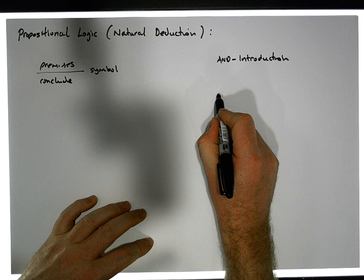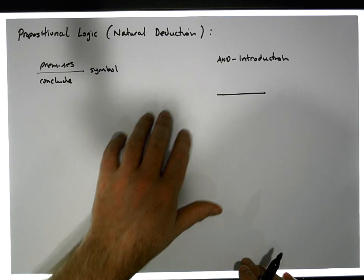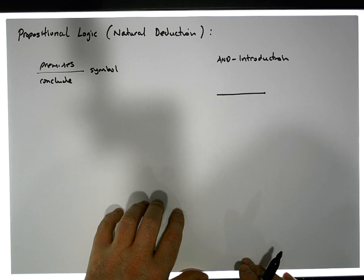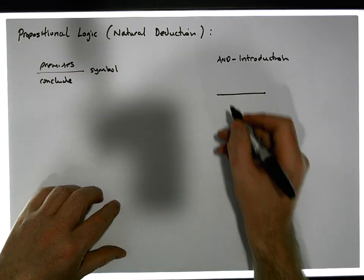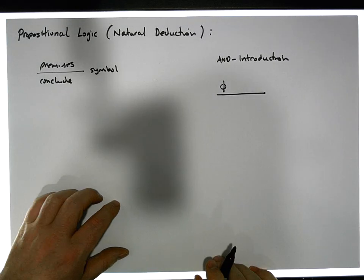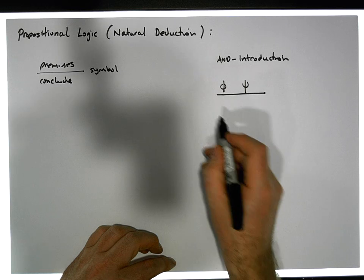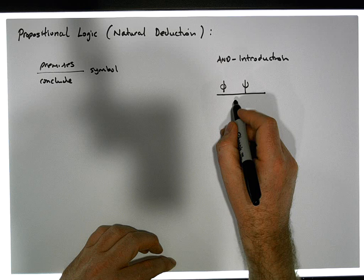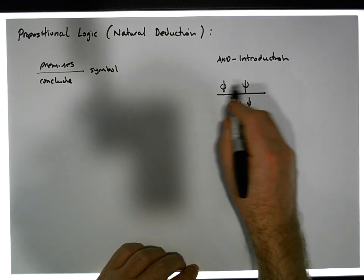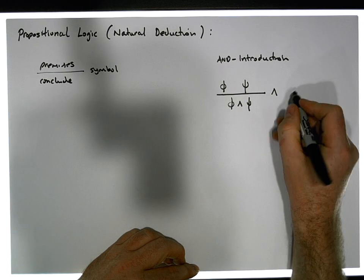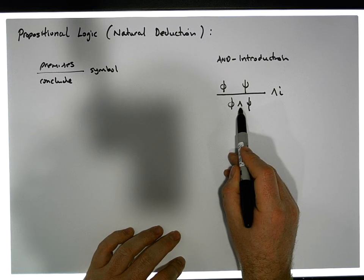When we're conducting a proof, we start with a set of premises and from them we deduce other things until eventually we reach a conclusion. What AND introduction says is this: if we have deduced phi from some previously defined things, and if we have deduced psi from those same things, then we can conclude that phi AND psi must be true. This is known as AND introduction, symbolized by the hat followed by an 'i'.